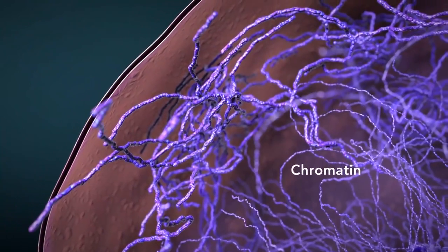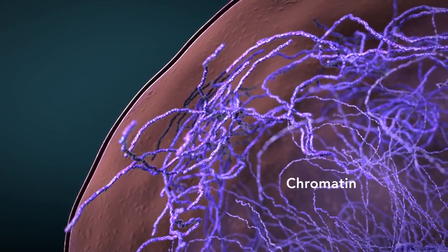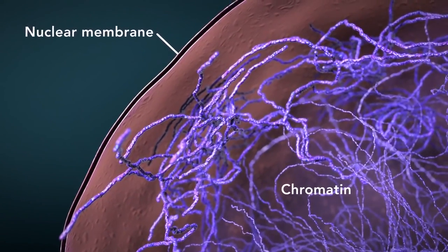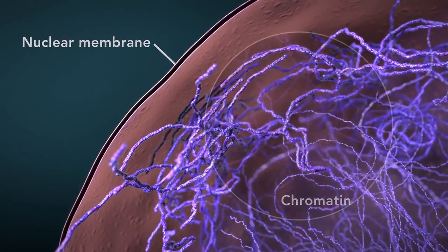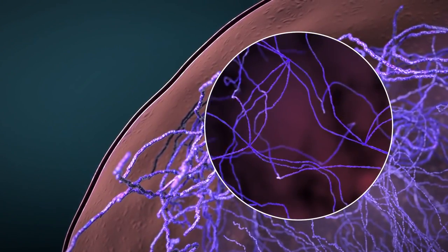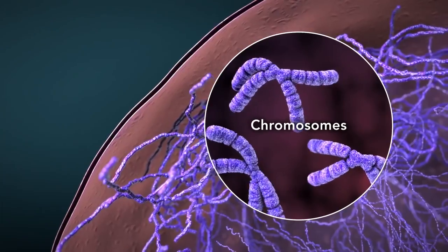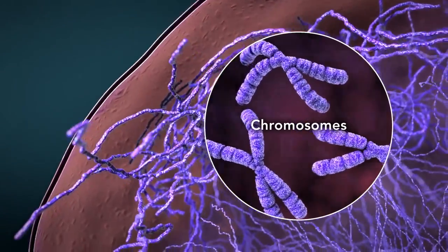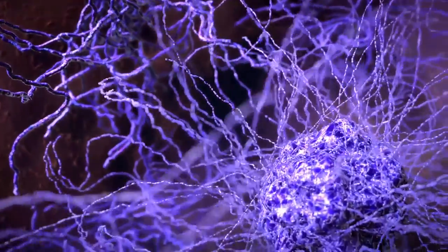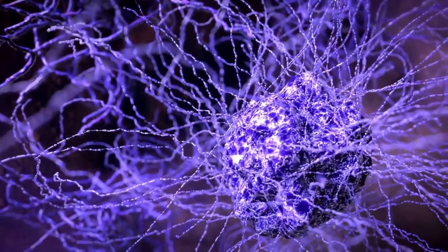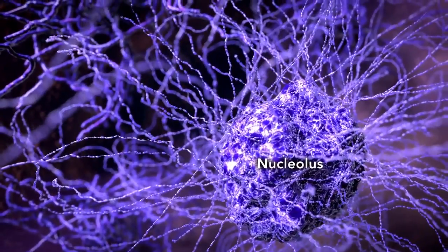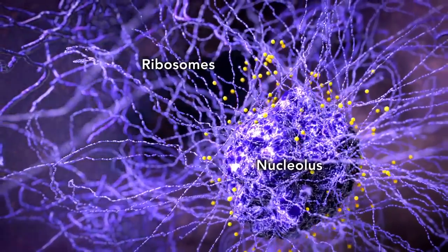Chromatin is the tangled spread out form of DNA found inside the nuclear membrane. When a cell is ready to divide, DNA condenses into structures known as chromosomes. The nucleus also contains a nucleolus, which is a structure where ribosomes are made.